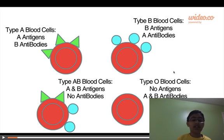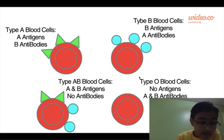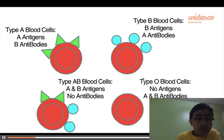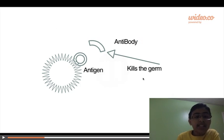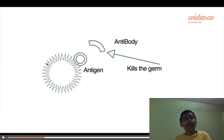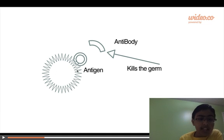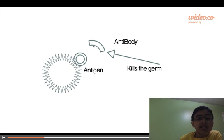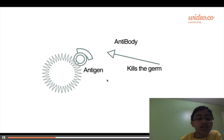Let me tell you what antigens and antibodies are. Take this germ for example — this is the antigen on it. This is the antibody that your immune system develops to hook on to the antigen, therefore killing the germ.